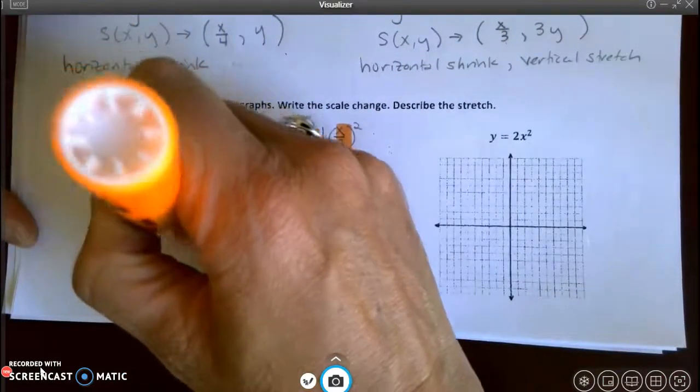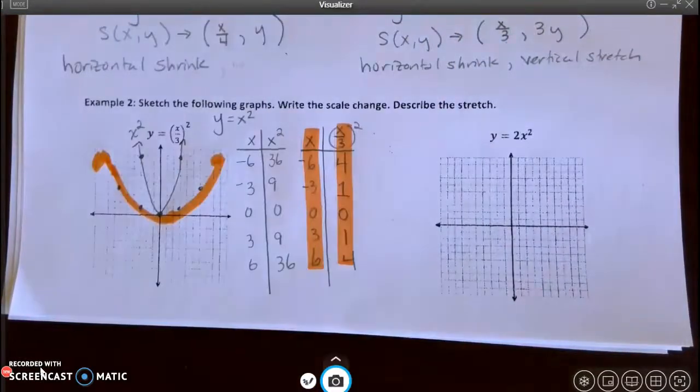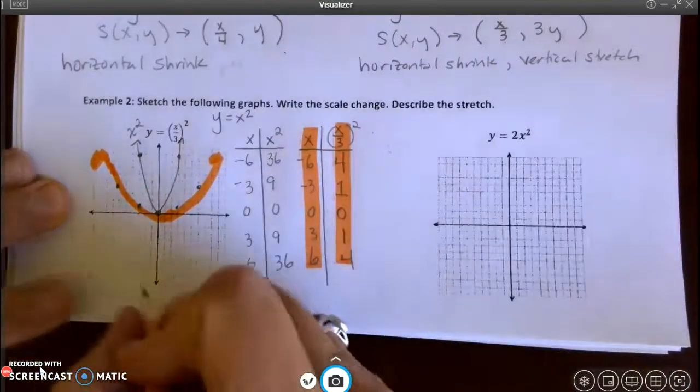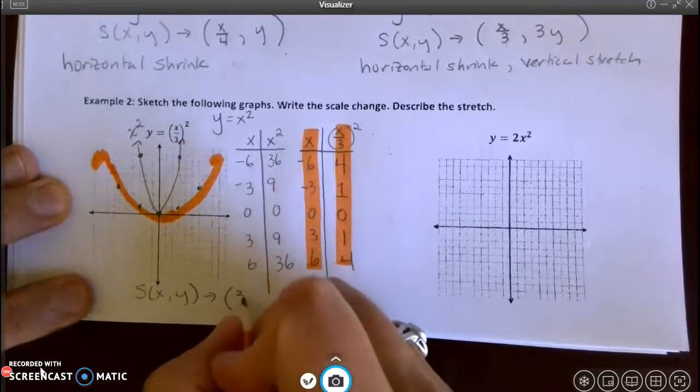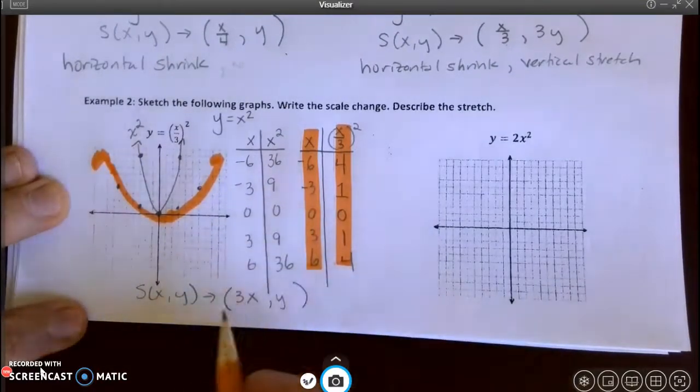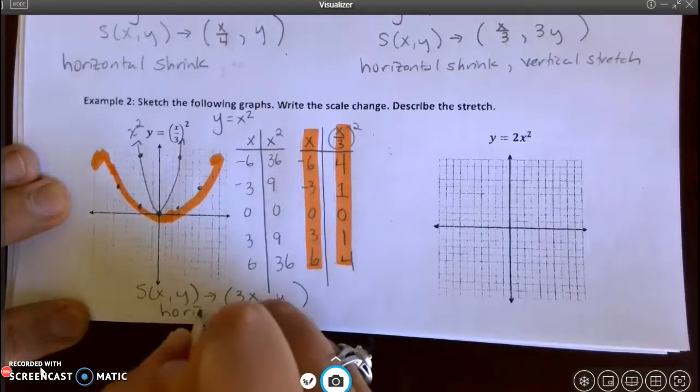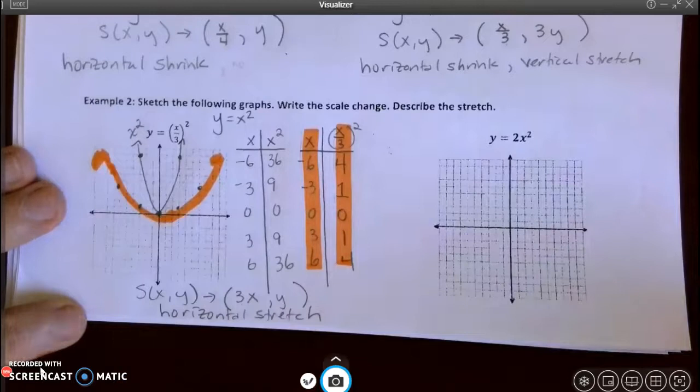And I wanted you to see how it actually affects the graph. Because a lot of times people get confused. Like, why would dividing actually stretch it out more? And I wanted you to see that that's actually what happens. And so my scale change for this is x gets multiplied by 3 and y does not change at all. Which means horizontally I get a stretch. Which is exactly what happened. I ended up with a horizontal stretch.